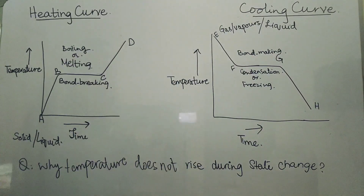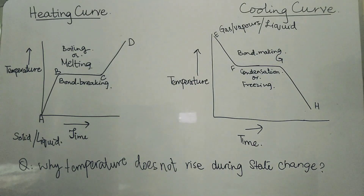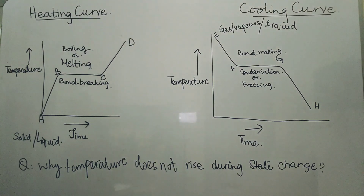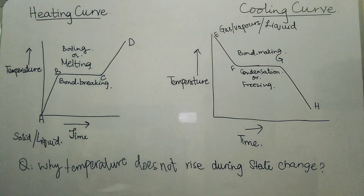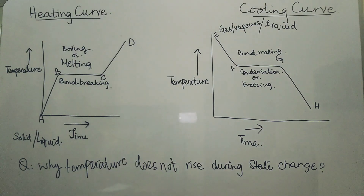And to explain the cooling curve — why the temperature does not drop from F to G — the explanation is all the heat is released as the particles of the liquid or the gas are attracted to each other as the bonding is developing. Because bond making is exothermic, heat is released. So whatever heat is released will go to the surroundings and does not drop the temperature of the substance. So from F to G, there is no drop in the temperature because the state is changing and all the heat being released goes to the environment.